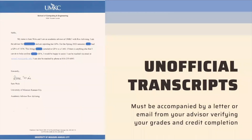With sending an unofficial transcript, it must be accompanied by a letter or email from your advisor verifying your grades and credit completion. Over on the left, we have an example from UMKC. This person's advisor had a nice introduction saying who they were and that they were the advisor for that student. They are including the GPA of the student for that semester. They also included the cumulative GPA, which is not necessary for the CIP but it's nice to have, and then their contact information if we need to reach them for any further questions.